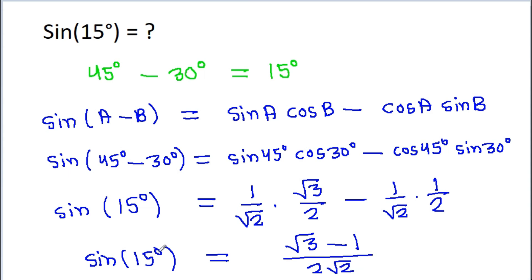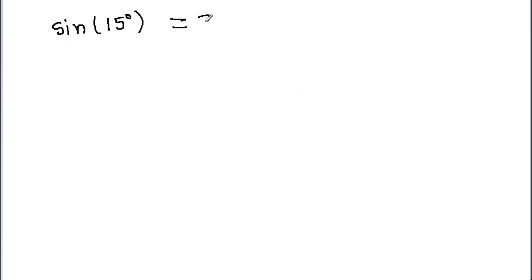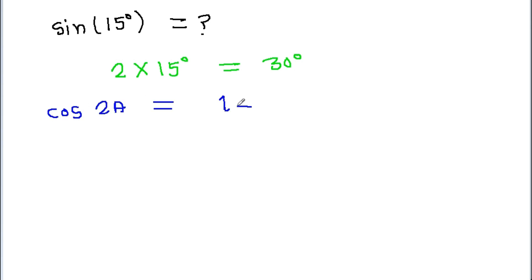So the value of sin 15 degree is root 3 minus 1 by 2 root 2. Now the second method to find the value of sin 15 degree: in multiples of sin 15 degree, we know the value of sin and cos 30 degree. We know that 2 into 15 degree is equal to 30 degree, and cos 2a is equal to 1 minus 2 sin squared a.